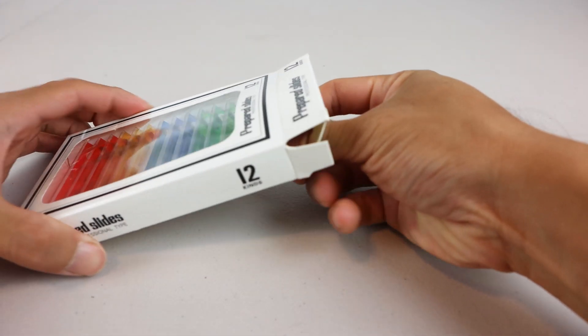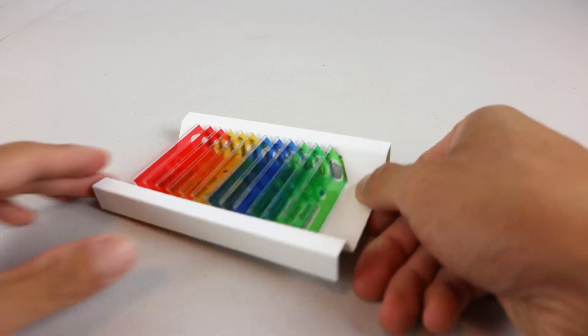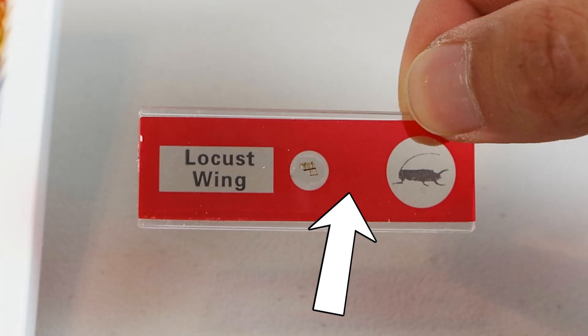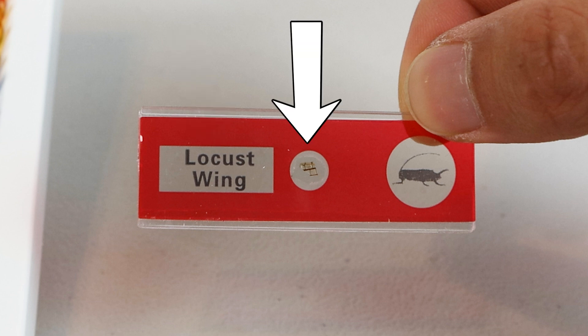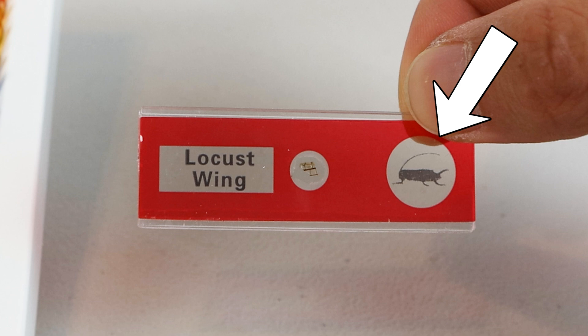Let's have a look at some of the included slides. Each slide has a colorful background, a label on the left-hand side describing the sample, the sample in the middle, and a graphic on the right-hand side which shows you where the sample came from.